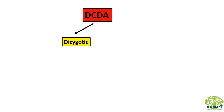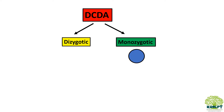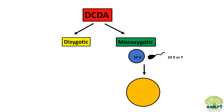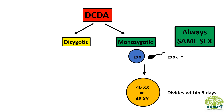Dichorionic diamniotic twins can arise from dizygotic or monozygotic conception. In monozygotic conception, one egg is fertilized by one sperm — which carries either 23X or Y chromosomes — forming one zygote, which can be a girl or a boy. If this zygote divides within the first three days, it forms DCDA twins. If it divides after three days, it can form MCDA, MCMA, or conjoined twins depending on the day of division. Therefore, all monozygotic twins will always be of the same sex.